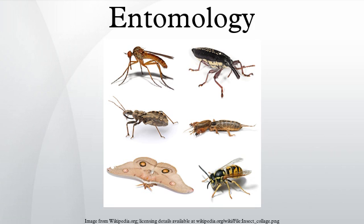Many entomologists specialize in a single order or even a family of insects, and a number of these subspecialties are given their own formal names, typically derived from the scientific name of the group: coleopterology (beetles), dipterology (flies), hemipterology (true bugs), lepidopterology (moths and butterflies), melittology (bees), myrmecology (ants), orthopterology (grasshoppers, crickets, etc.), trichopterology (caddisflies), and vespology (social wasps).